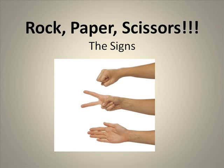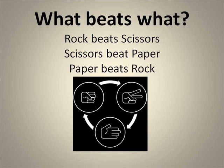Greetings. If you've never seen a rock, paper, scissors battle, then you're in for a treat. But first, you need to understand the rules. There are three different signs that you can make: a rock, a pair of scissors, or a piece of paper. You count one, two, three, and on three, you show whatever sign you want.